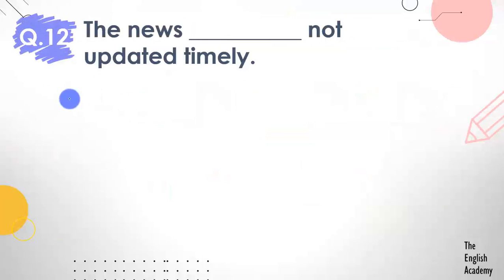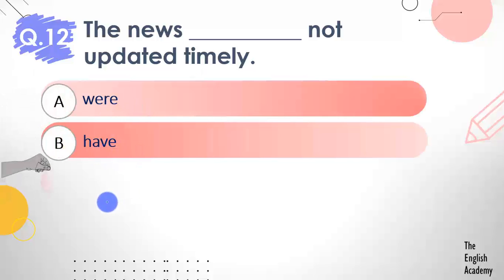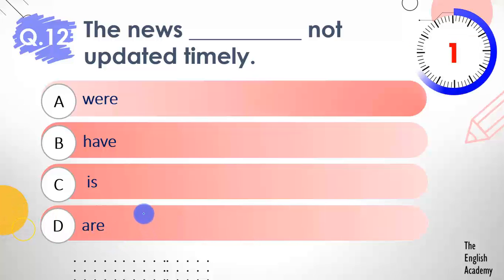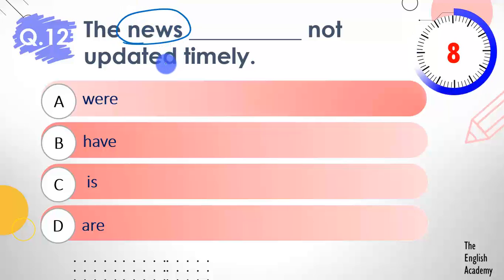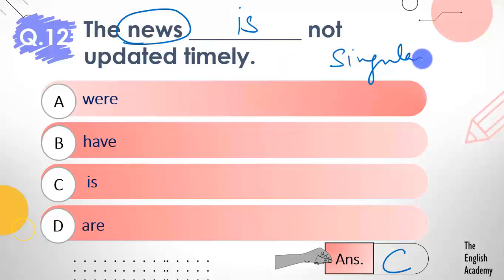Question number 12: The news ___ not updated timely. Options: A) work, B) have, C) is, D) are. You need to identify whether 'news' is treated as singular or plural. The answer is option C — is. The news is not updated timely. We treat 'news' as a singular subject because it is used collectively for all news.